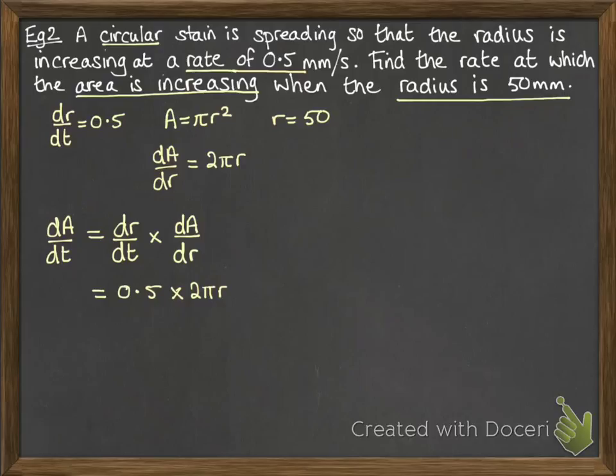Substitute in the things that we've worked out for dr by dt and dA by dr. And then put in r is 50 to be able to work out what our rate is when the radius is 50. And that will be in millimetres squared per second, because we're talking about the area, which would be measured in millimetres squared, over the time, which is measured in seconds.